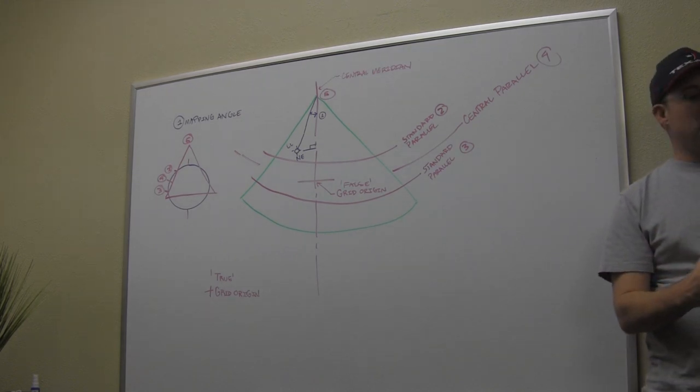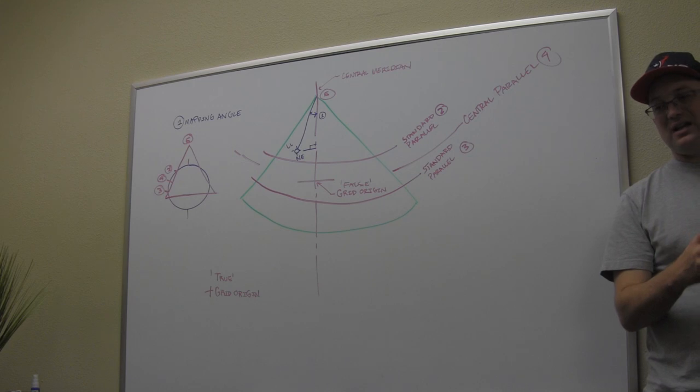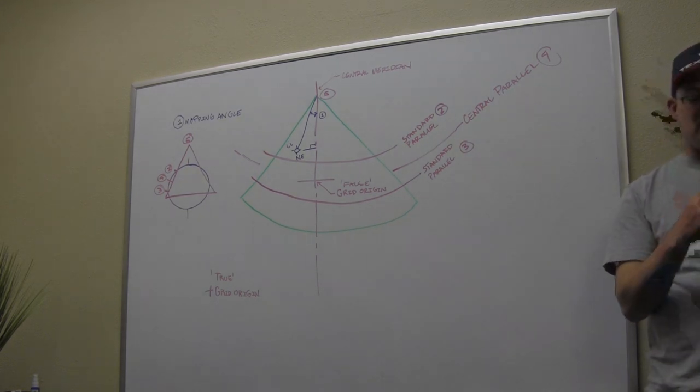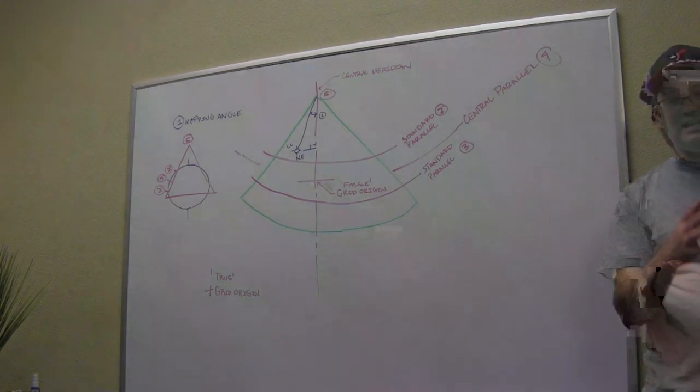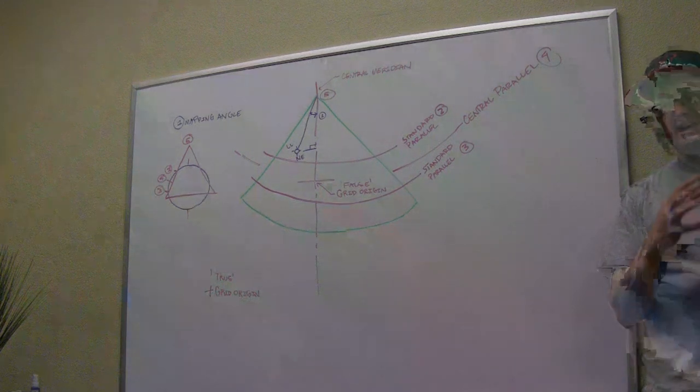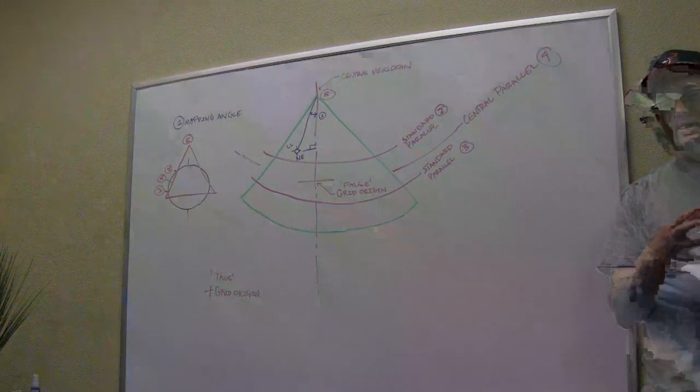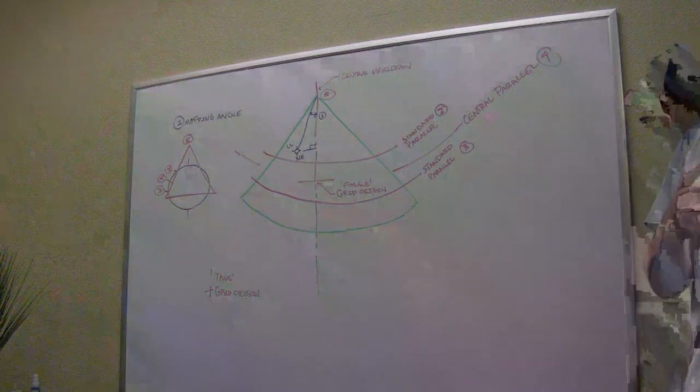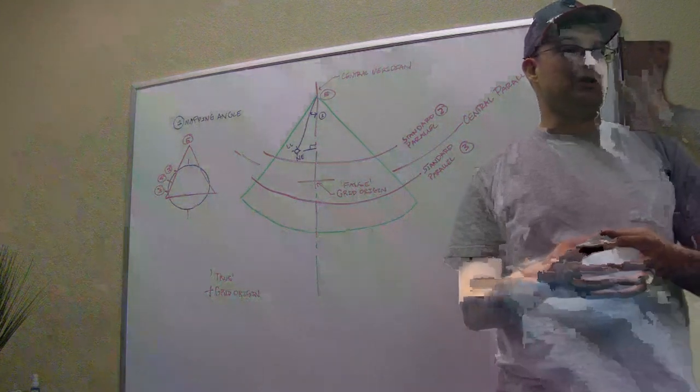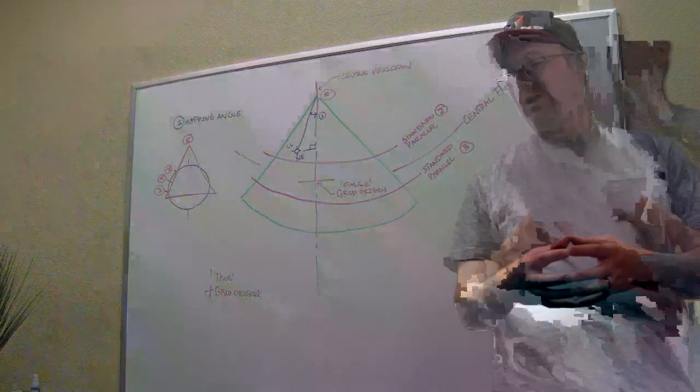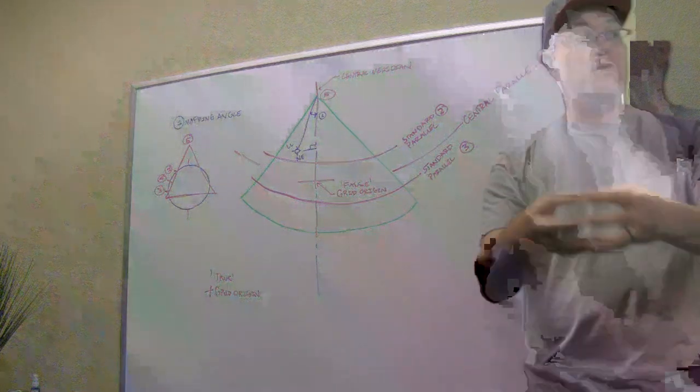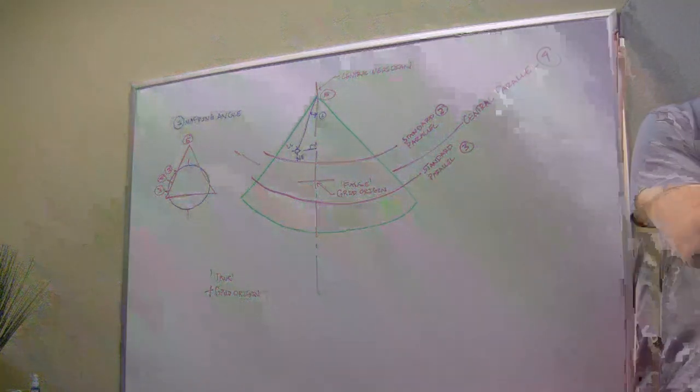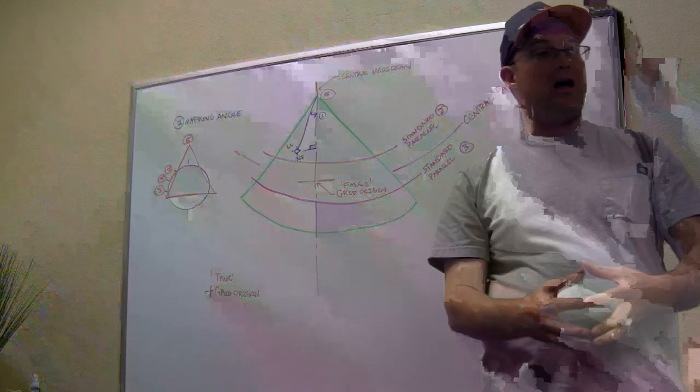We're talking about California state plane coordinates today. I want you to understand that not all state plane coordinates are the same. There's a different number of zones depending on the state. The LSIT is a national test. Not every state plane coordinate system has a cone as the basis of its projection. I'm going to teach you California because that's what we use, but when you're taking the LSIT, those questions could be more broadly applied.